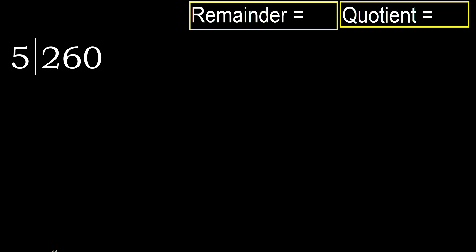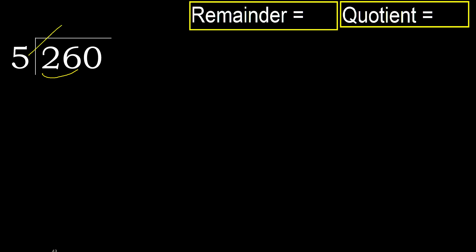260 divided by 5. 2 is less, therefore next. 26 is not less, therefore with 26, 5 multiplied by which number is nearest to 26.